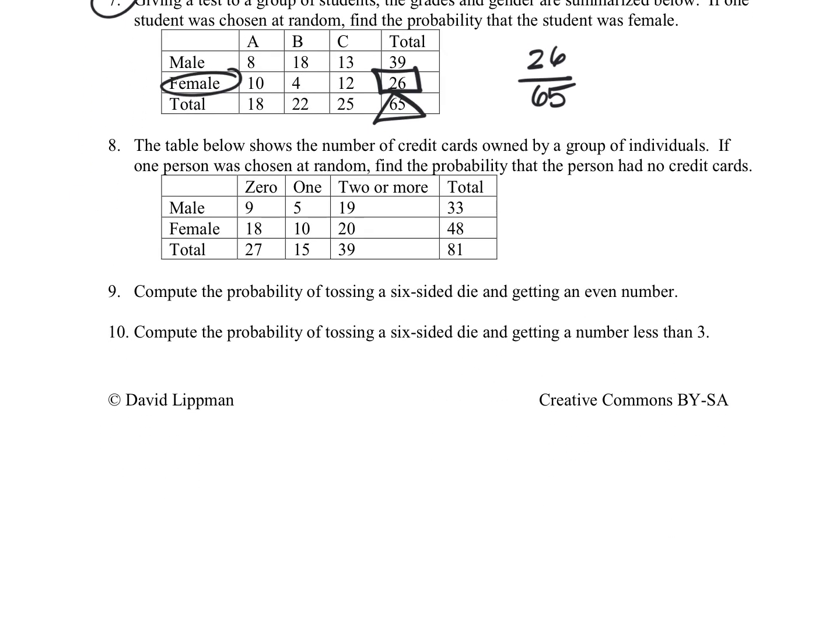For question number nine, we're going to compute the probability of tossing a six-sided die and getting an even number. So the even numbers are 2, 4, and 6. So there are three ways that can happen out of six. So one-half, or we might say 50%.